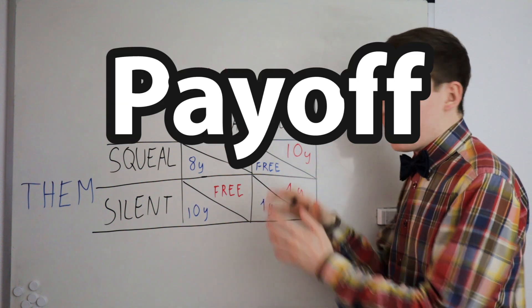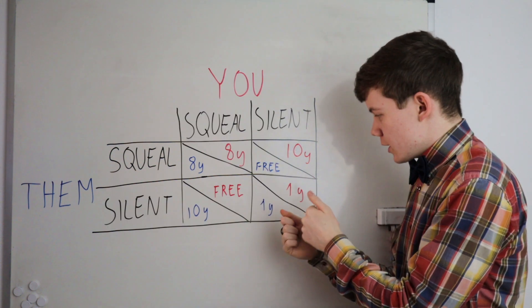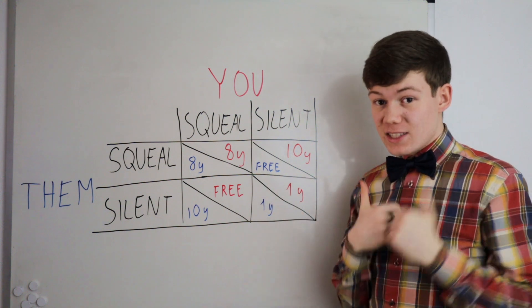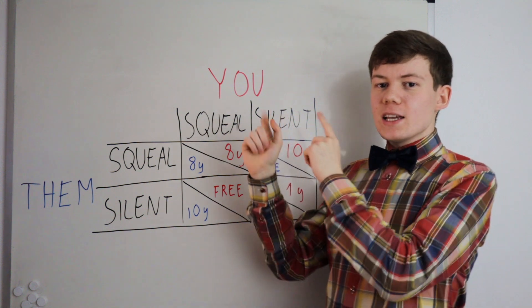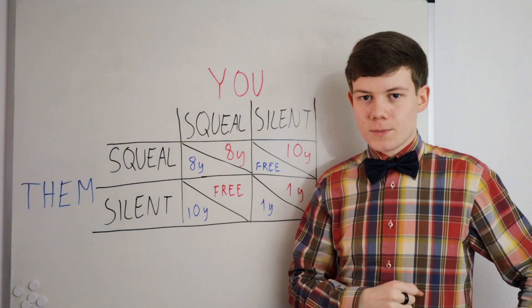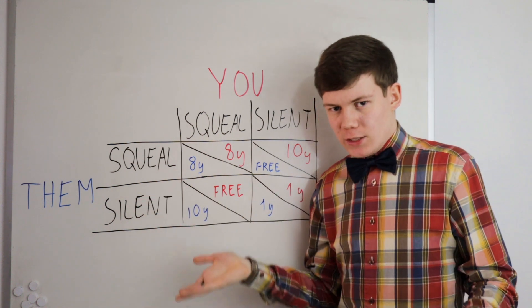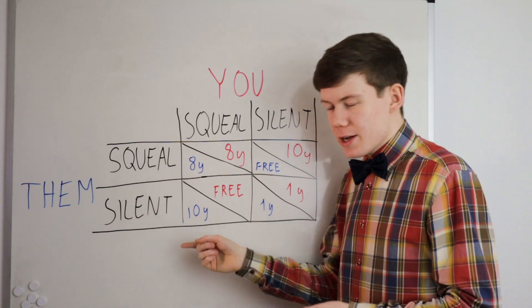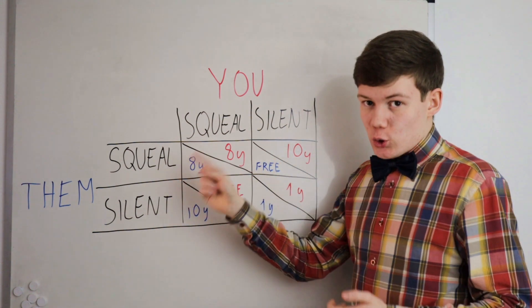I mean, looking at the payoff matrix, as this type of grid is called, it looks like staying silent is the best thing for both of you to do. But if we look at this from a player's perspective, we see that that might not be the case after all. So let's take this from your perspective. Say you don't know this partner very well at all, they could go for either squeal or silent. You don't really know. There's a 50-50 chance.